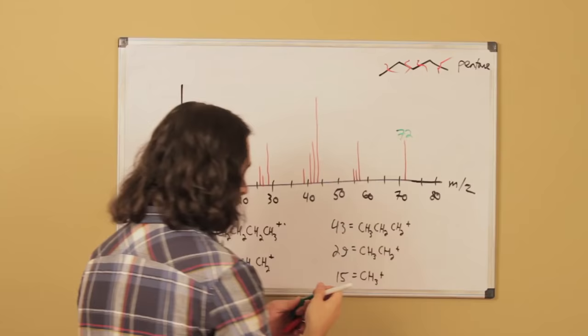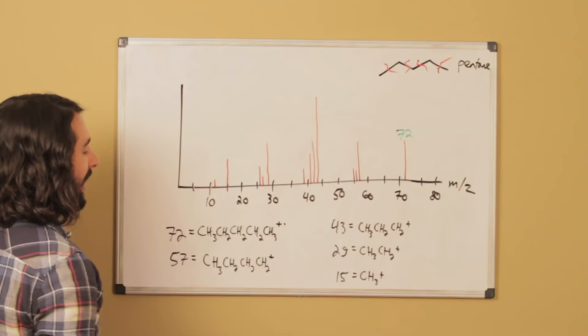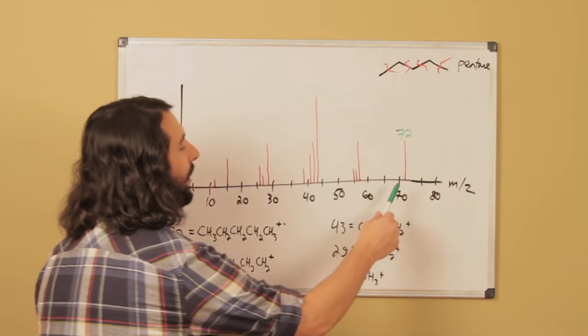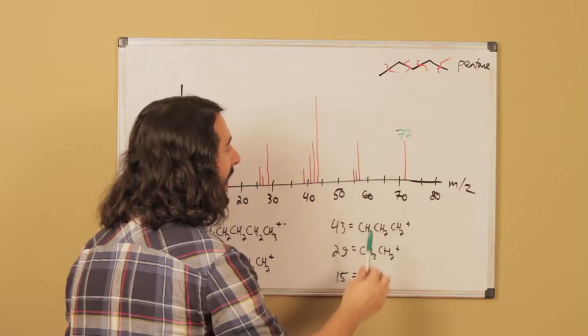For example, right here we've got 72, and so some of the parent molecules will be ionized and turn into something called a radical cation. This is essentially the mass of the parent molecule, of the whole thing. We don't see any data beyond that because there can't be anything heavier in there than the whole molecule. This represents the entire molecule, that's the molecular mass of pentane.